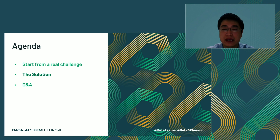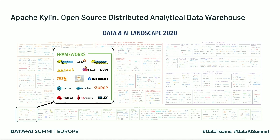Now let's see the solution with Apache Kylin. Apache Kylin is an open-source distributed analytics data warehouse in the big data industry, just like Hadoop, Spark, and Flink. Kylin is also an important component in the big data ecosystem — we can see it is located in the open-source framework section alongside Hadoop, Spark, and others in this year's data and AI landscape.